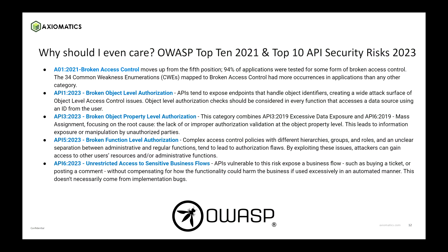Why should I care? Both OWASP's top 10 and the API-specific top 10 from 2023 address this. The first and second bullet are actually the exact same thing — BOLA, broken object-level access, also known as IDOR. These are the reasons why you want to do it: to make sure that Alice gets access to her own medical record and not Bob's medical record.